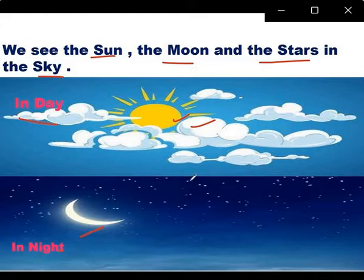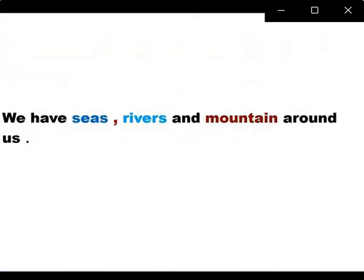So these are the things which are around us — it's called our surrounding. Our surrounding. Correct. We have seas, rivers, and mountains around us. Sea, rivers, mountains — this is our surrounding.